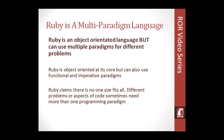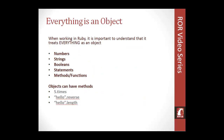Ruby is a multi-paradigm language — it is object-oriented but can utilize multiple types of paradigms for different problems. Ruby can also be functional and imperative. Everything in Ruby is treated as an object, which is a really important thing to understand when programming with Ruby. Everything is an object and objects have methods. Numbers, strings, booleans, and statements all have methods. Ruby likes to define functions as methods — I may use either term interchangeably, but they're basically the same thing.